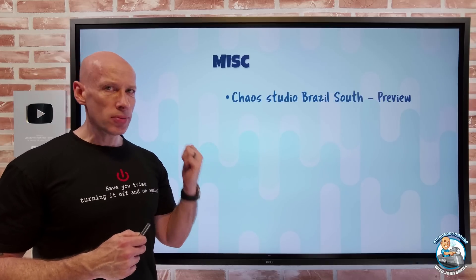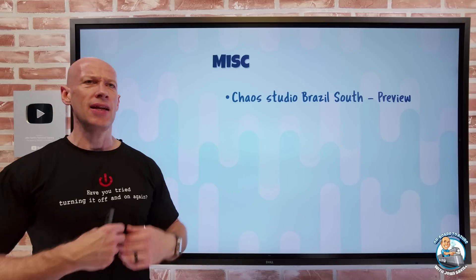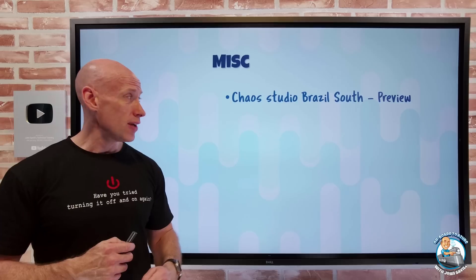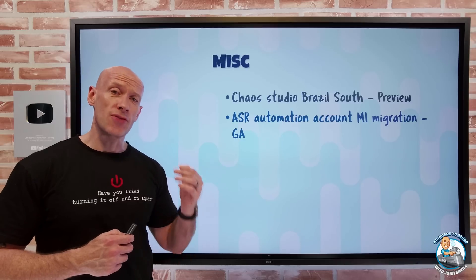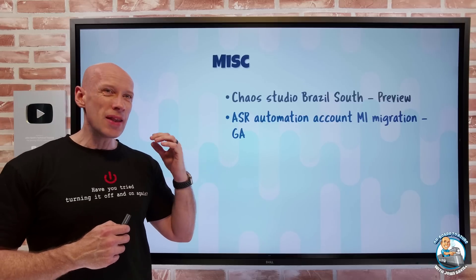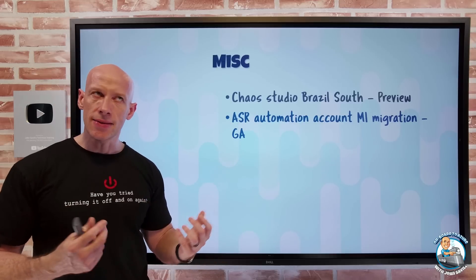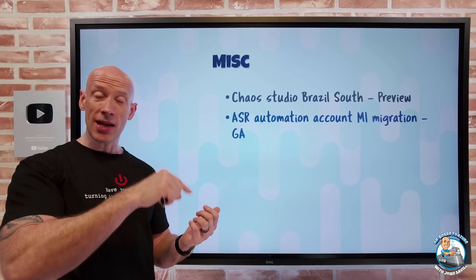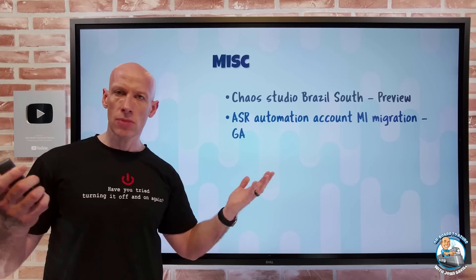Miscellaneous updates: Chaos Studio, for creating experiments such as zone down, rack down, or CPU stress scenarios, is now available in Brazil South in preview. And Azure Site Recovery uses automation accounts for some of its recovery processes - in the past these used Run As accounts, which have been phased out in favor of managed identities. Now there's a migration capability where you can go in and say you want to migrate to managed identity, and it will change those automation accounts from Run As to using managed identity.